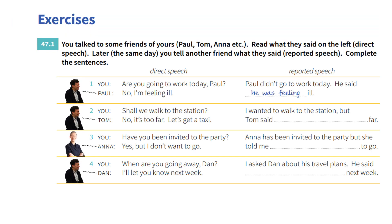Now let's do exercises. You talk to some friends — Paul, Tom, etc. Read what they said on the left in direct speech. Later the same day, you tell another friend what they said in reported speech. Number one: You ask, 'Are you going to work today, Paul?' Paul says, 'No, I'm feeling ill.' Paul didn't go to work today. He said he was feeling ill.